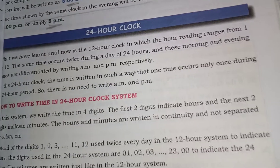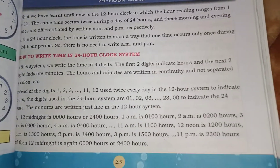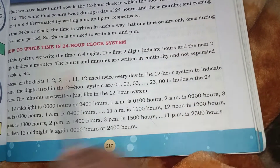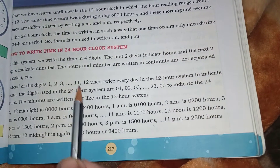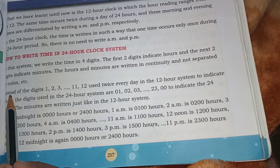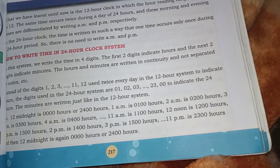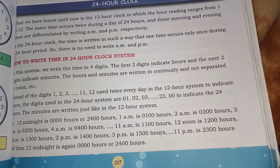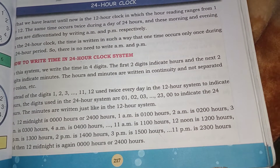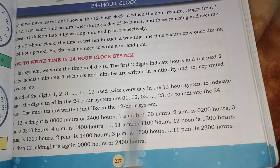Next: the 24-hour clock. How to write time in the 24-hour clock system — in this system we write the time in 4 digits. The first 2 digits indicate hours and the next 2 digits indicate minutes. The hours and minutes are written continuously and not separated by a colon. Instead of digits 1 to 12 used twice every day in the 12-hour system, the 24-hour system uses 01, 02, 03 and so on to indicate hours.